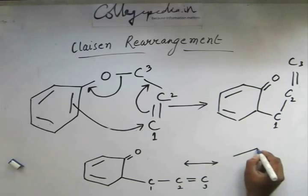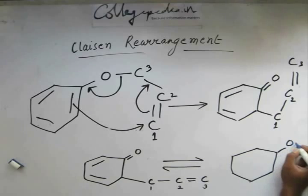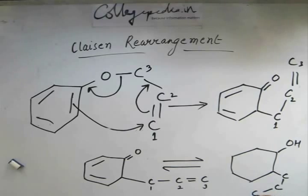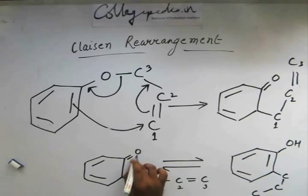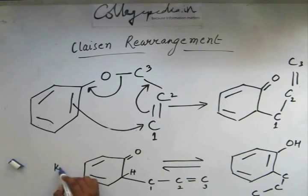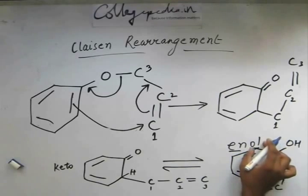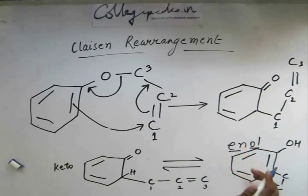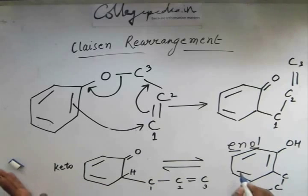What happens then is a tautomerism: the alpha hydrogen from this position jumps to the O, and this bond is shifted in this position. This was the keto form of the compound and this is the enol form. Enol comes from 'en' (alkene) and 'anol' (alcohol) — we have an OH group and a double bond. The enol form is the more stable product here because it is benzenoid.